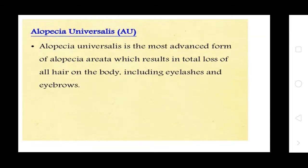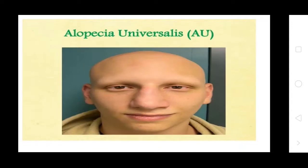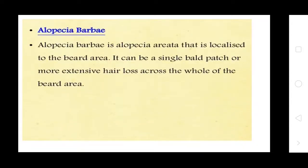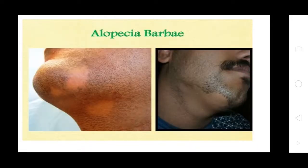Alopecia Universalis is the most advanced form of alopecia areata which results in total loss of hair on the body, including eyelashes and eyebrows. Alopecia Barbae is the alopecia areata that is localized on the beard area. It can be a single bald patch or more extensive hair loss across the whole beard area.